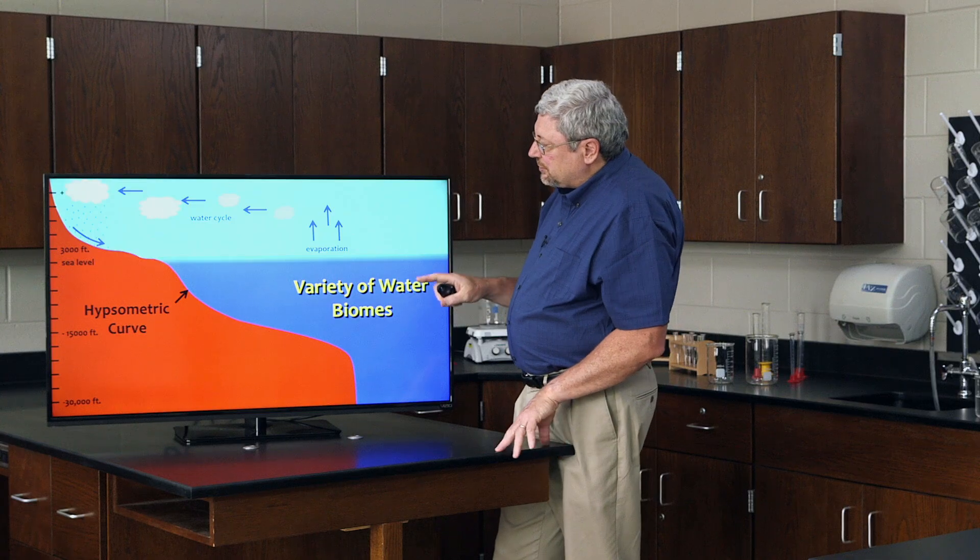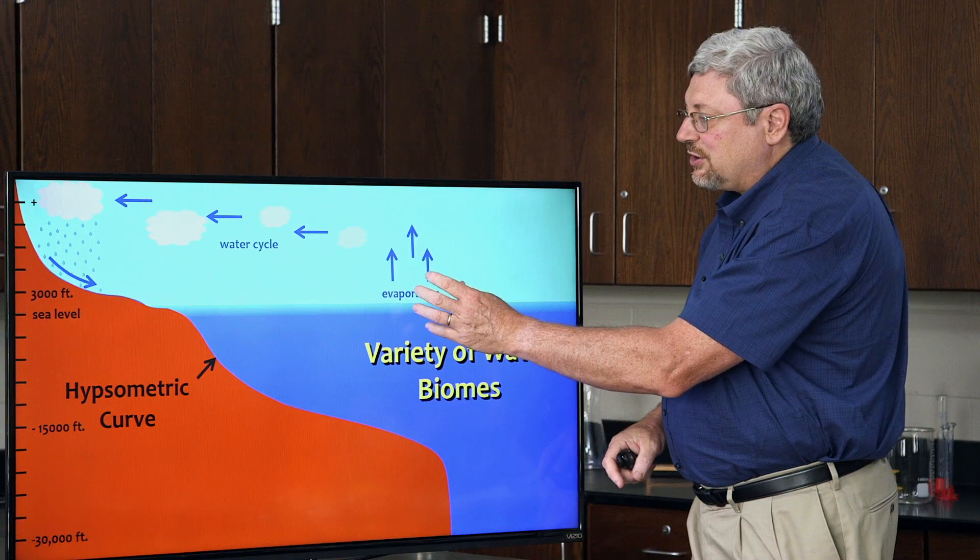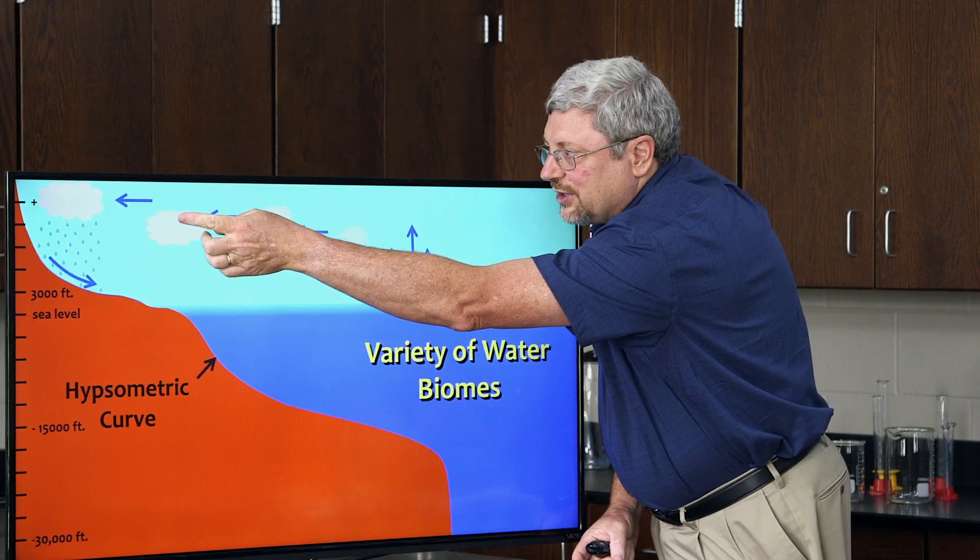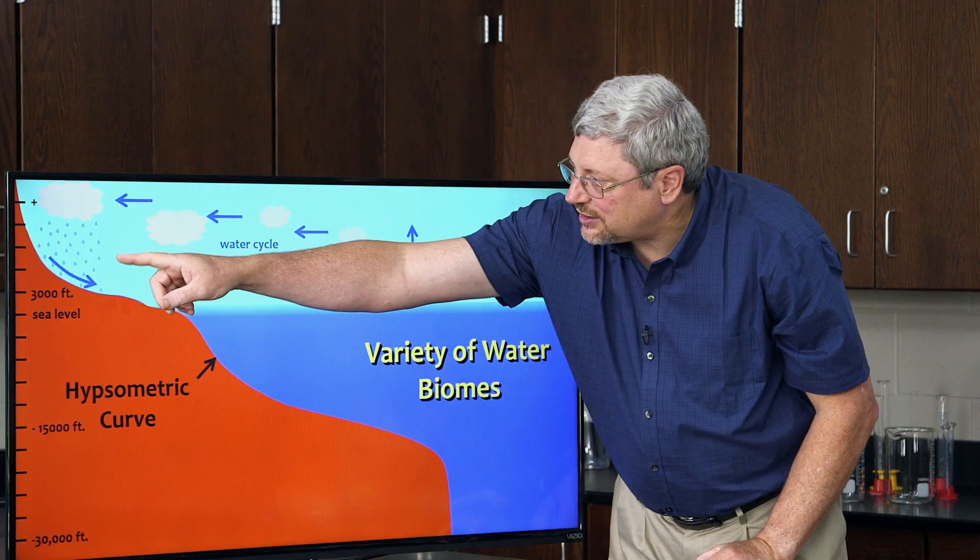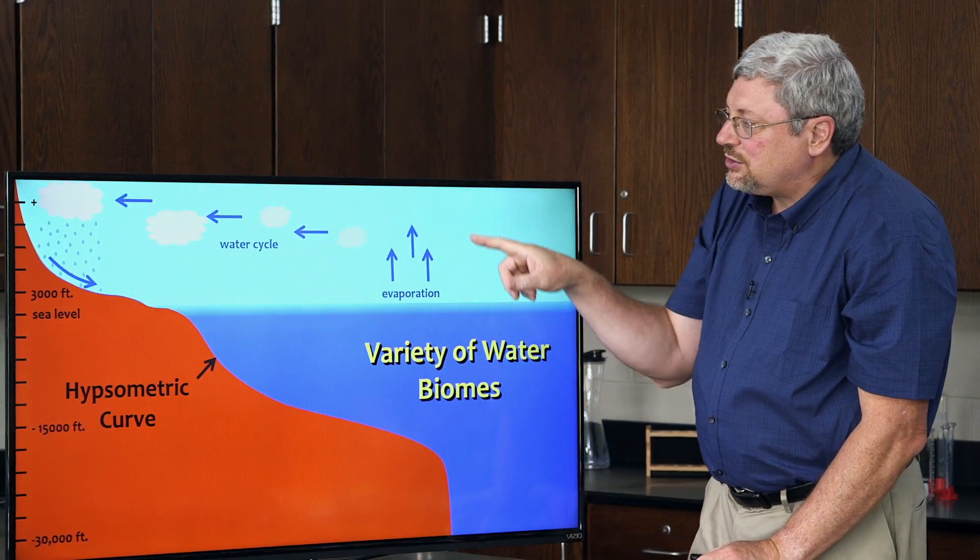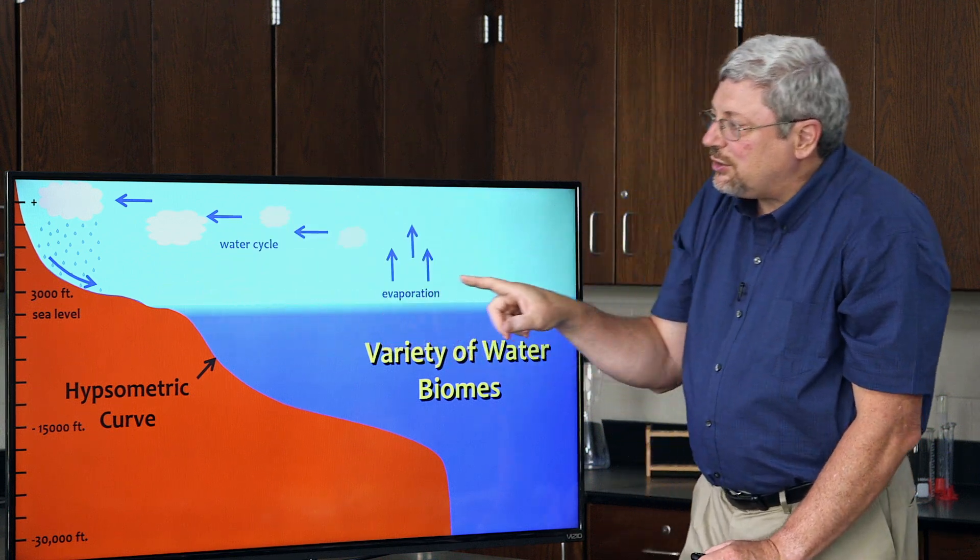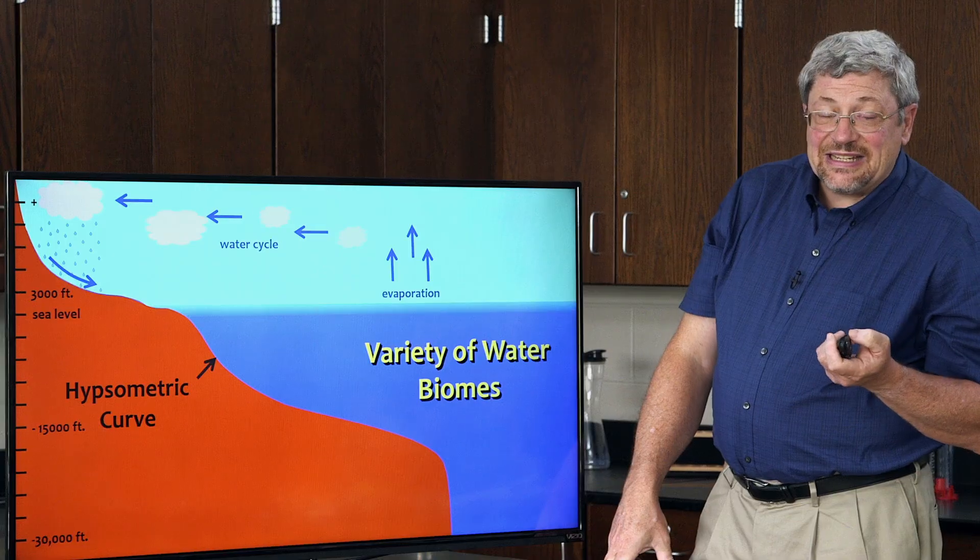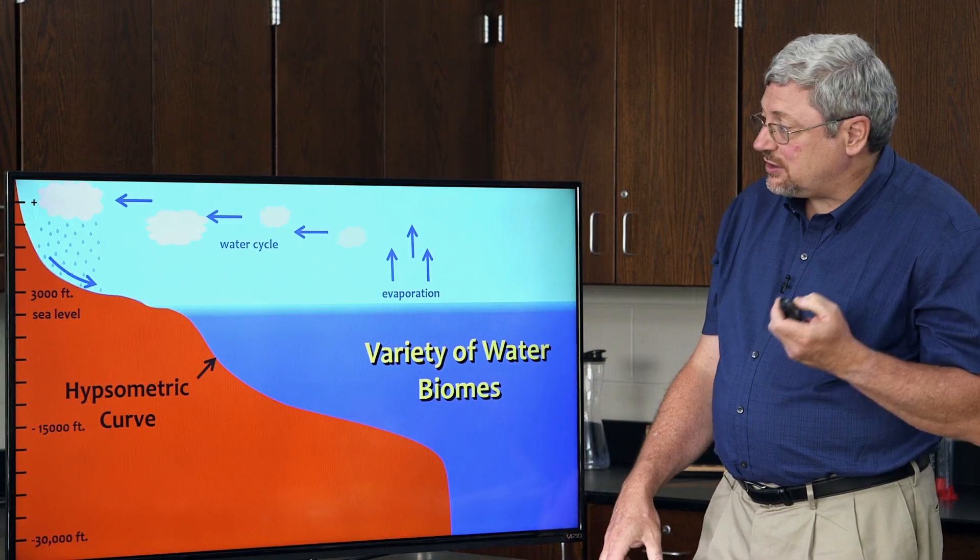If you superimpose upon this the water cycle—the fact that evaporation occurs off of the water into clouds which move over the land, which drop the water onto the land, precipitating, and the water flows back into the ocean, creating this cycle that is continuously ongoing—then we can see why there are different water biomes on the earth.